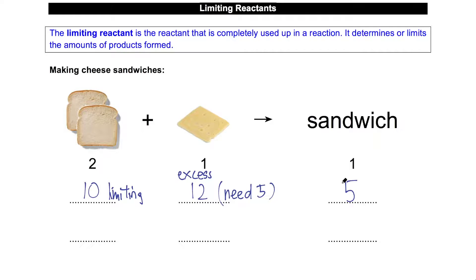Looking at the definition: the limiting reactant is completely used up in the reaction. In this case my ten pieces of bread will be completely used up. I have excess cheese, but no matter how much cheese I have, the number of sandwiches I can make is limited by the slices of bread, because bread is the limiting reagent.